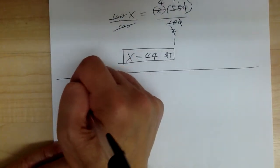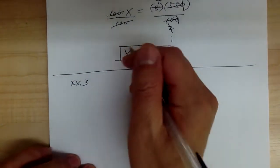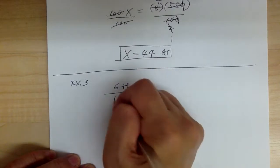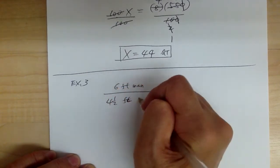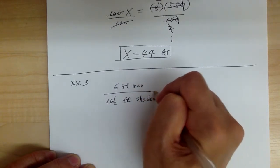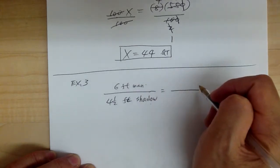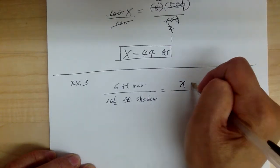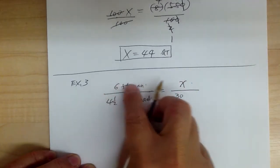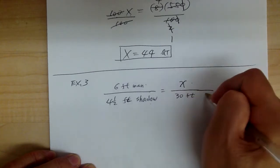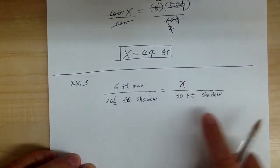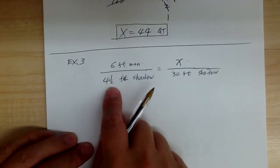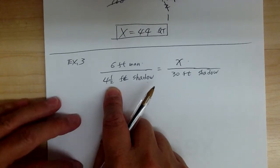Let's go to example 3. A 6-foot man casts a 4.5-foot shadow. So the man — actual man — is on top; the shadow is on the bottom. How tall is a tree? That's your X. The tree casts a 30-foot shadow. So on the top is the actual object, and on the bottom is the shadow. If you're not sure what to do, just look over here — the shadow is on the bottom, so the shadow has to be on the bottom. You have mixed numbers, so you need to convert into improper fractions.